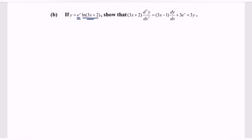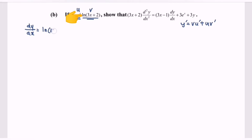We differentiate y with respect to x using the product rule. So y prime equals v times u prime plus u times v prime. We name the parts as u and v. So dy/dx equals v, which is ln(3x plus 2), multiplied by u prime, meaning we differentiate eˣ.